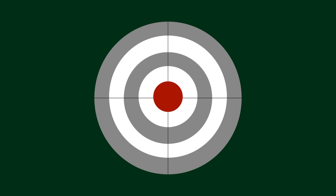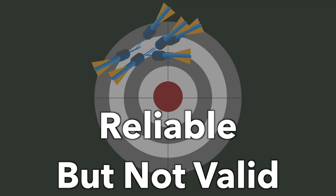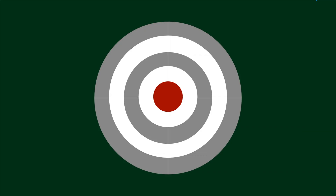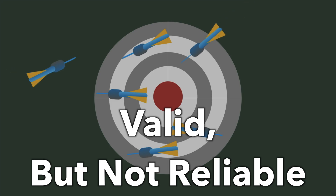Look at this target visual — that helps me think about reliability and validity when I'm teaching it. To be reliable and not valid, imagine hitting a bunch of arrows in one corner of the target. Everybody's hitting the target but not the center — your aim is not true, but you're all similarly hitting the same part. To be valid but not reliable is scattershot all over the target — you're hitting the target but not all hitting it in the same way.